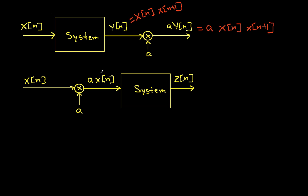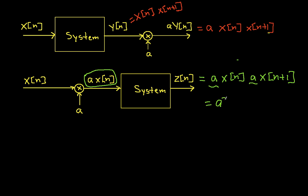In the second configuration, I multiply the input by a first. So the output is a times x of n, times a times x of n plus 1, because the system takes its input at time n and multiplies it by the input at time n plus 1. Collecting the a's gives a squared times x of n times x of n plus 1. So the system does not satisfy homogeneity: multiplying before running through the system gives an a squared term, while multiplying after gives just an a term. Therefore, this system is not linear.